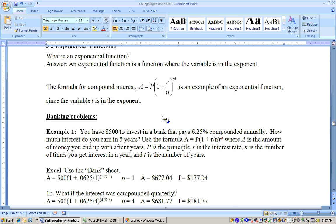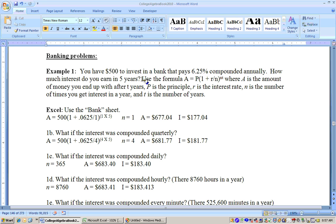Let's do this first problem. You have $500 to invest in a bank that gives 6.25% compounded annually. How much interest do you earn in five years? Use that formula we had right above. On this problem, the principal was $500, then 1 plus the interest rate. The interest rate was 6.25%, which if I move my decimal two places to the left is 0.0625, divided by N. N is the number of times you get interest in a year.